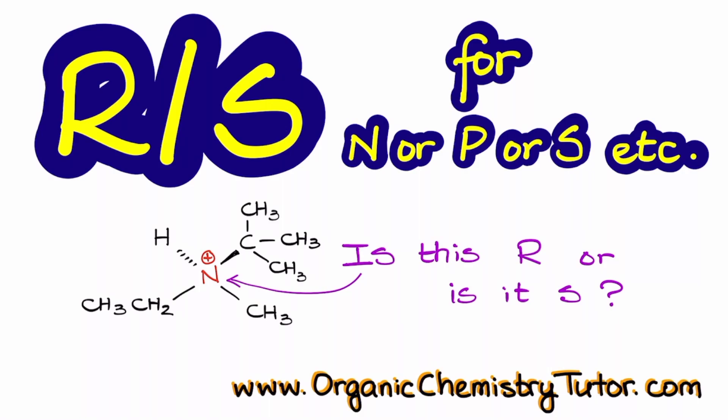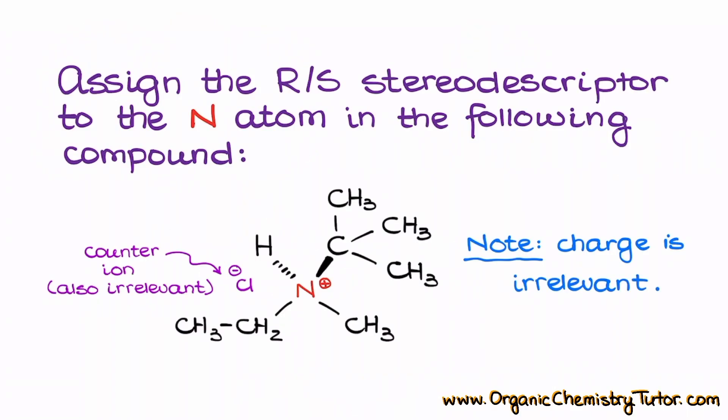Can we only assign the R and S stereodescriptors to carbon atoms, or can other atoms have stereodescriptors as well? Hello everyone, Victor from OrganicChemistryTutor.com is here. And yes, other atoms can have the R and S stereodescriptors as well, for as long as they are attached to four different groups of either atoms or electrons.